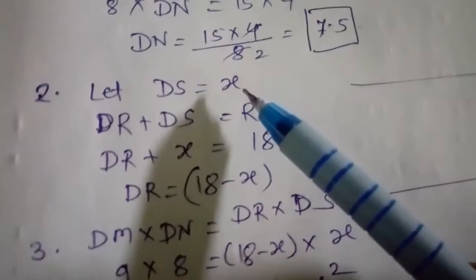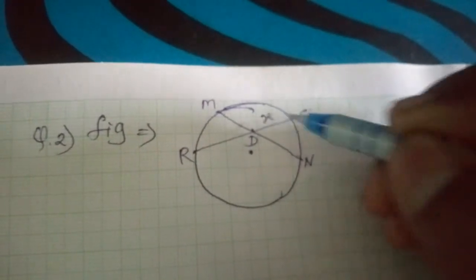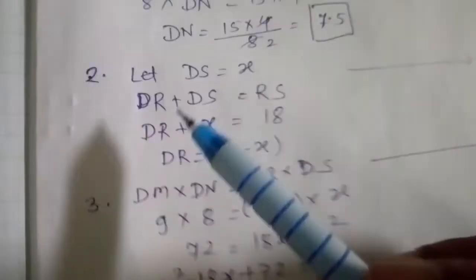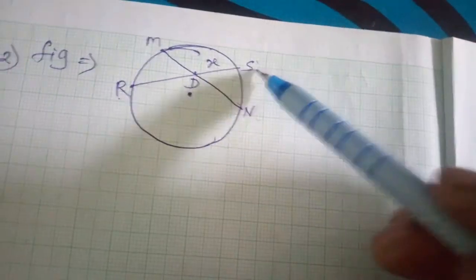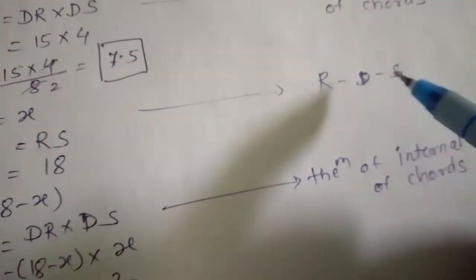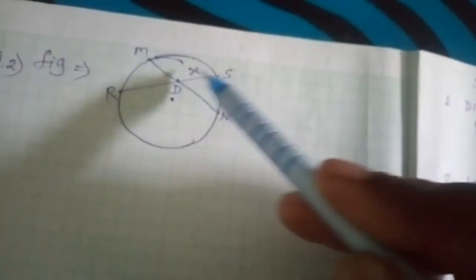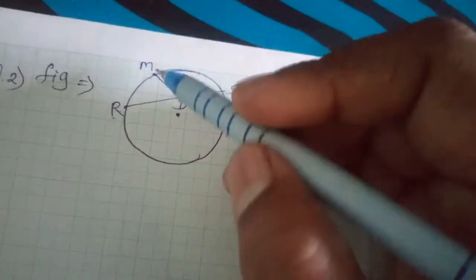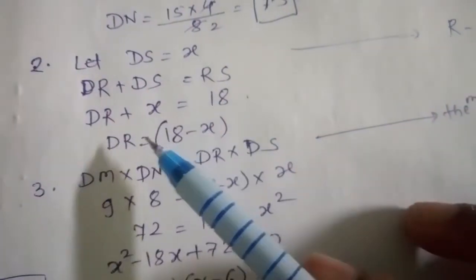For the second part, we consider DS = x. Since RD + DS = RS, and RS = 18, we get RD = 18 − x. So DR = 18 − x and DS = x.